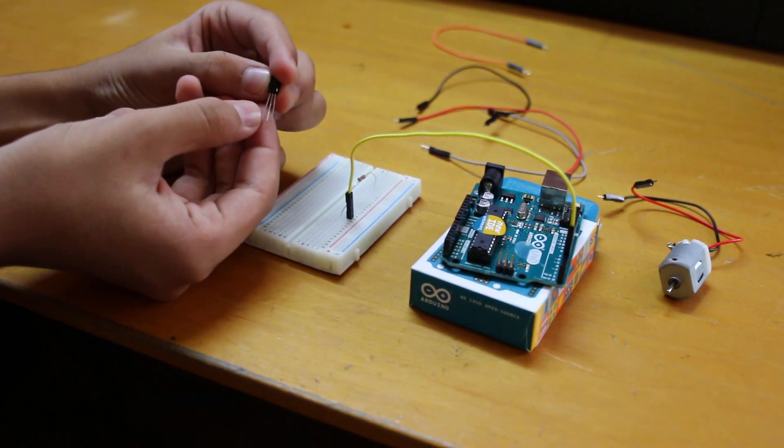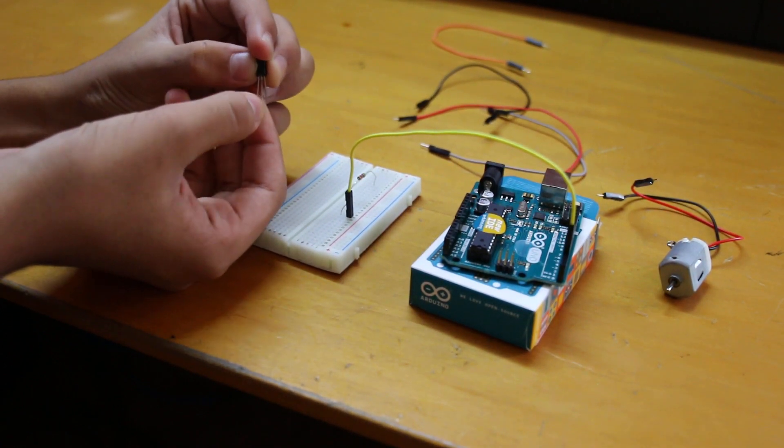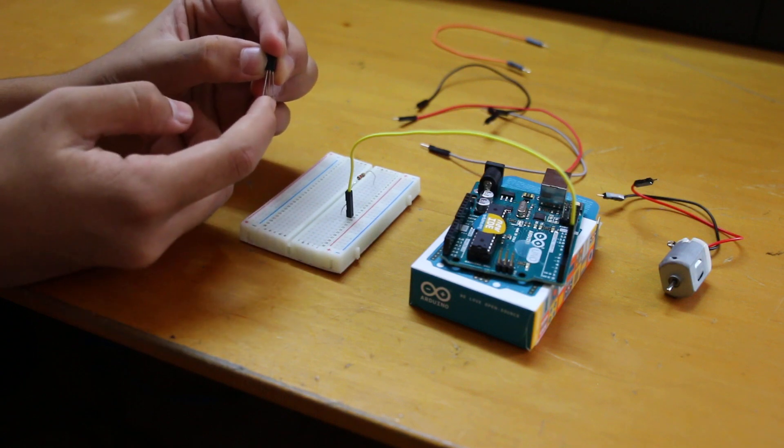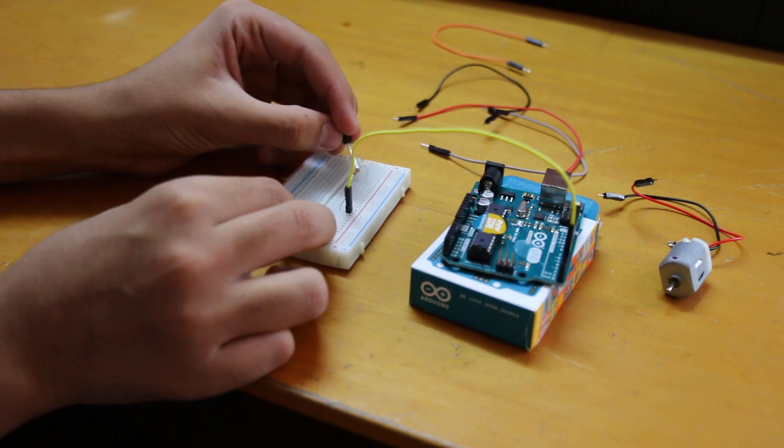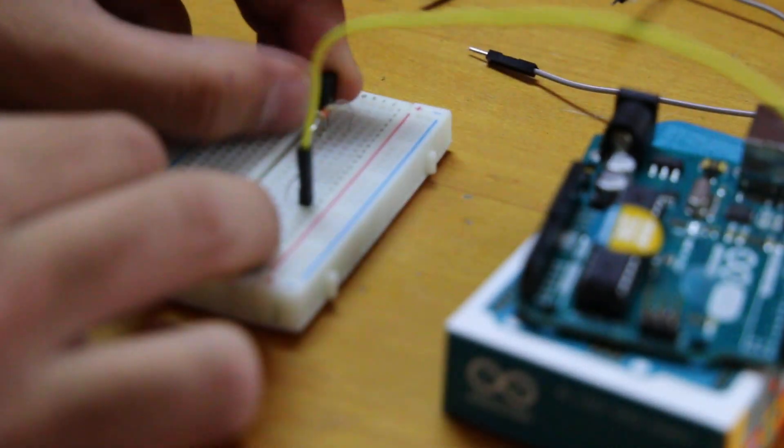So now in this transistor, the leftmost pin over here is an emitter. Then we have the collector, and we have the base. So the base is going to be connected to this. So therefore we put the transistor like this.